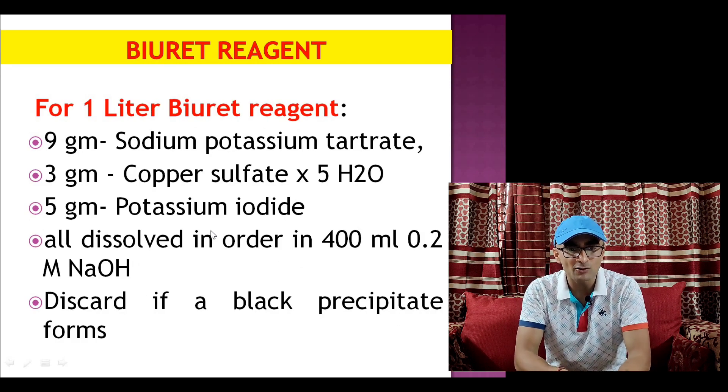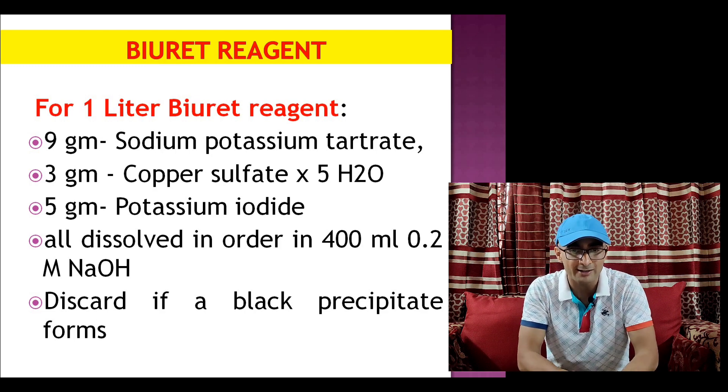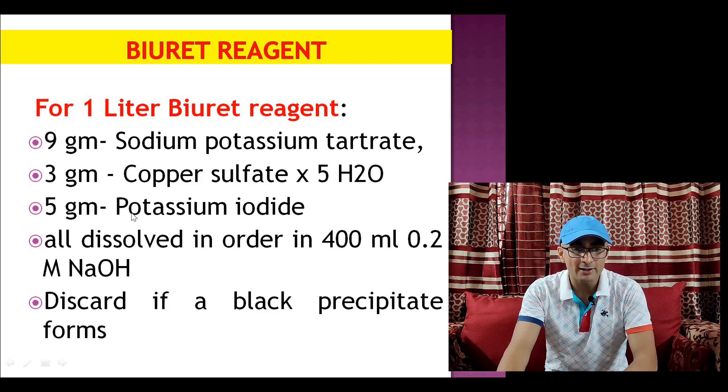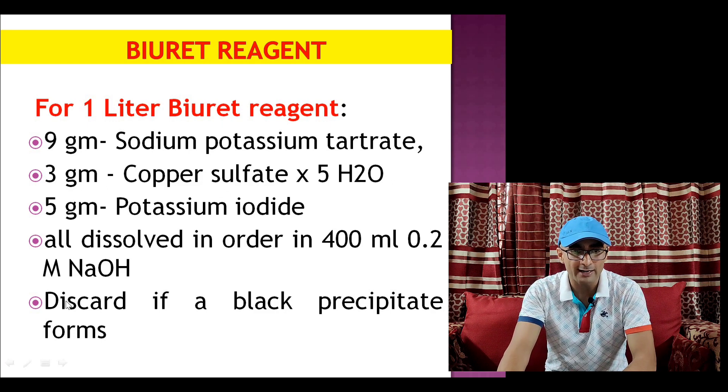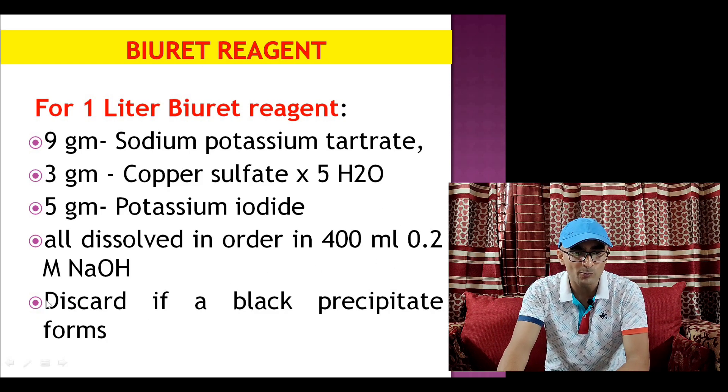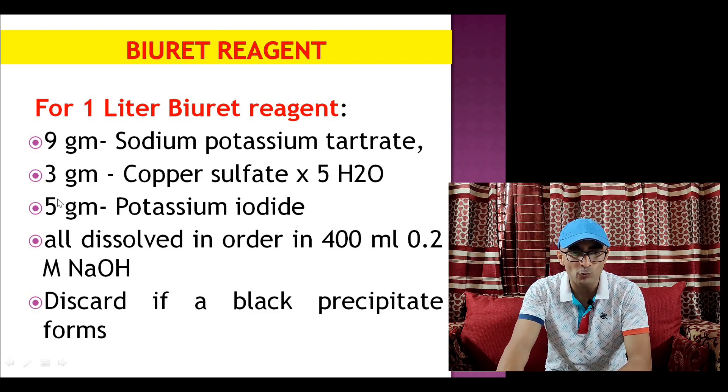Biuret reagent is comprised of 9 gram sodium potassium tartrate, 3 gram copper sulfate pentahydrate, 5 gram potassium iodide, this is for composition for 1 liter Biuret reagent, and all these three components are dissolved in 400 ml of 0.2 molar NaOH and then the final volume is made up to 1 liter.